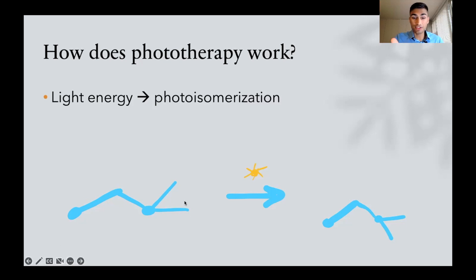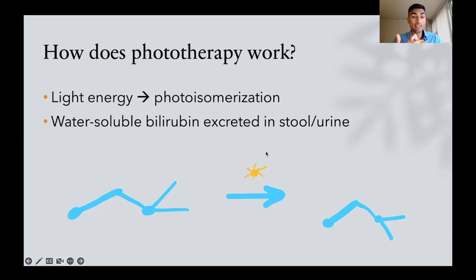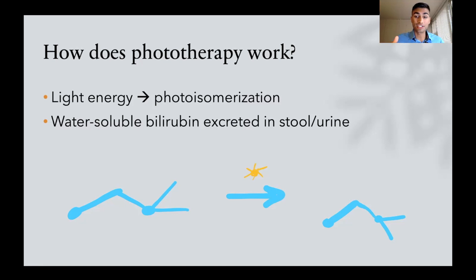This is an illustration — it's not the actual structure of bilirubin, just a cartoon. If this is the molecule, you give some light energy and maybe the molecule rotates around some axis, so this part is sort of flipped. It's still the same components, just oriented differently in space. This can have implications on the solubility — and that's what happens with bilirubin. The process of rearranging the atoms in space turns the bilirubin into a form that's water-soluble, and then you can excrete that into the stool or urine, clearing the bilirubin from the blood.